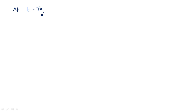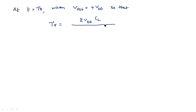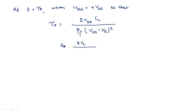At T = τR (rise time), when Vout equals VDD, we get: τR = 2 × VDD × CL / [βP × (VDD − VT)²]. If we substitute VT = 0.3 VDD and simplify, the approximated value becomes: τR ≈ 3CL / (βP × VDD). This is the rise time τR.